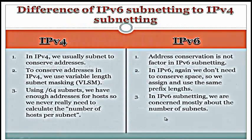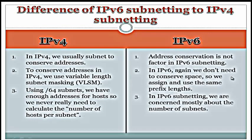Now let me explain some differences between IPv6 and IPv4. The first difference: in IPv4, we usually subnet to conserve addresses. But in IPv6, address conservation is not a factor because we can get a lot of addresses from IPv6. The second difference: to conserve addresses in IPv4, we use Variable Length Subnet Masking, VLSM. In IPv6, we don't need to conserve space, so we assign and use the same prefix length.